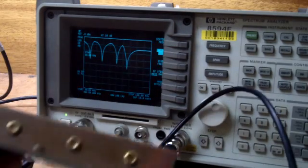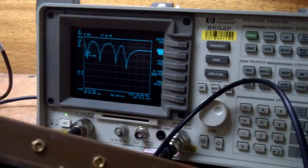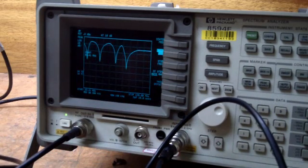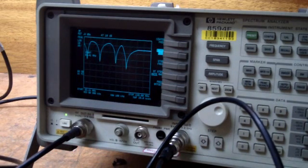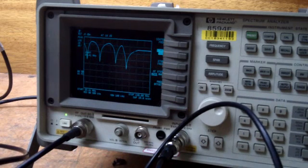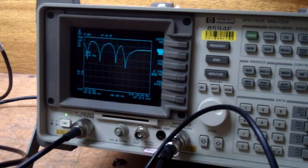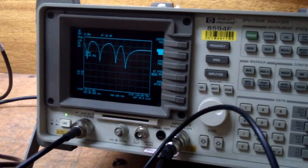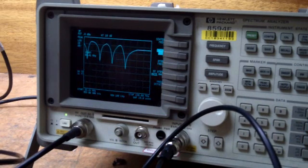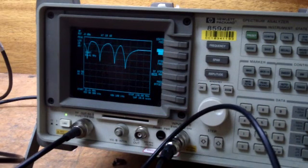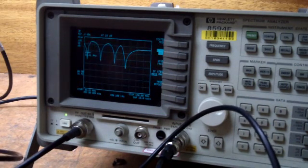So using a tracking generator on your analyzer you can see you've got your four latches and they're adjustable across the bands 88 to 108.